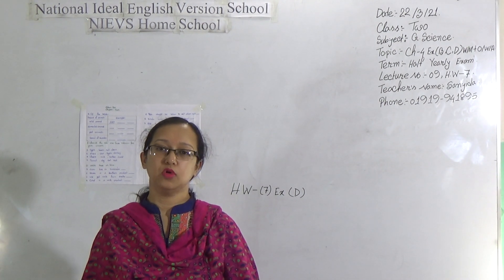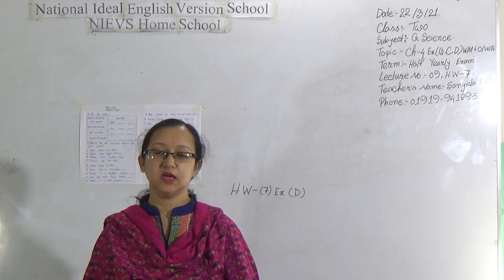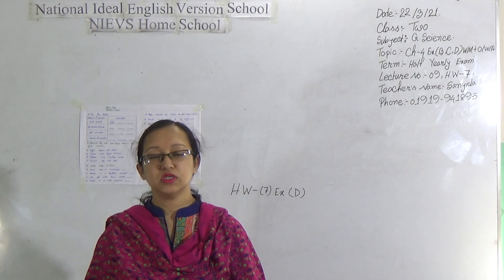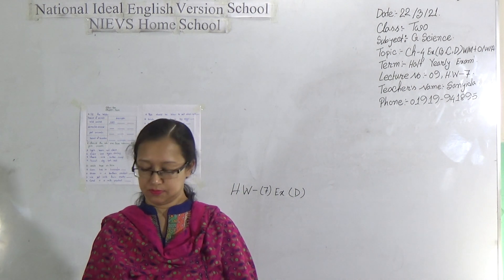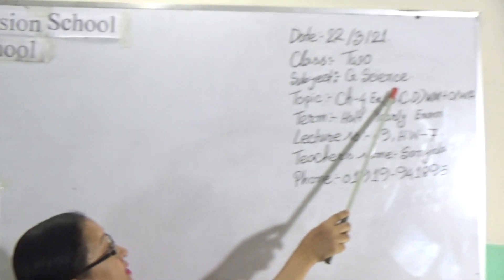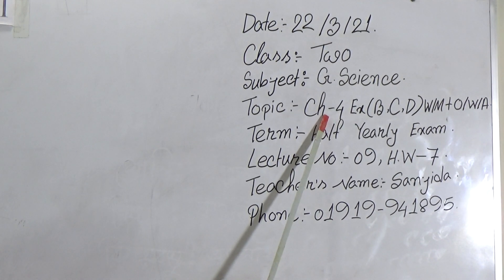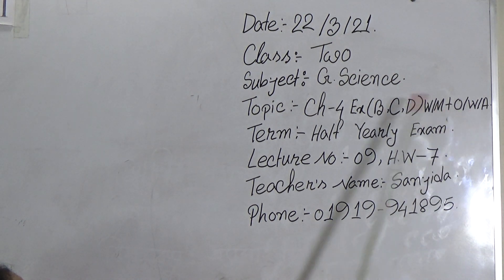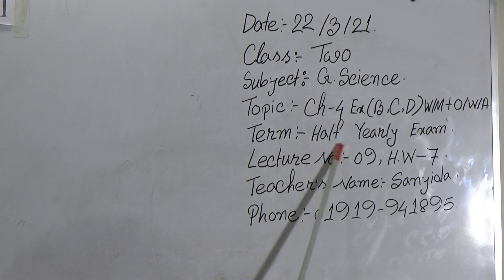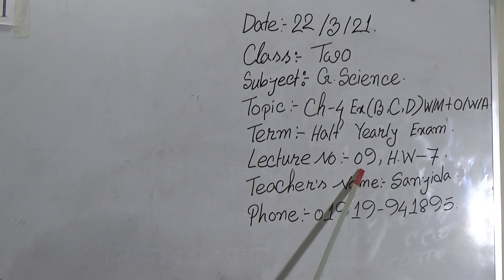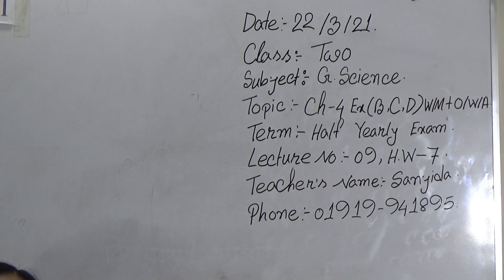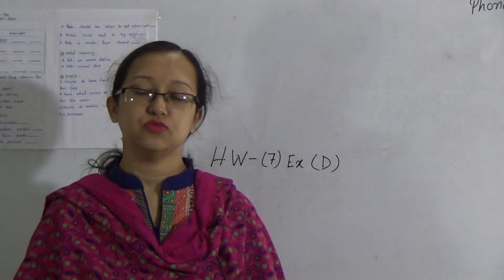My dear students, Assalamualaikum. Hope you are all well by the grace of Almighty Allah. I am Shanjida Rahman, Assistant Teacher of National Ideal English Version School. Today I am going to take a class for the students of Class 2. My today's class is Science. Our today's topic is General Science, Chapter 4, Exercise B, C and D, Word Meaning plus One Word Answer. Today's lecture number is 9, Homework number 7. Teacher's name Shanjida Rahman. If you need, you can contact me using my number. Now let's go to our today's topic.